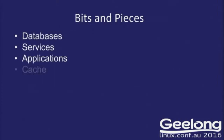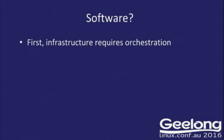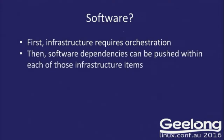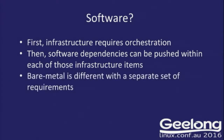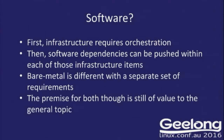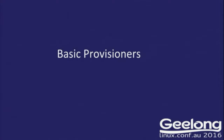You've got your different bits of infrastructure: databases, services, all the way up to applications, caching layers, and whatever routing you might require. You want to look at orchestrating all of your infrastructure — software dependencies need to be mapped and managed, and you want to be able to push these across each part. You don't want to have to remember which applications require what dependencies. Hardware is a bit different — you can't just destroy one piece and create a new piece; it's long-lived. But you can use a lot of tools on both with the same general ideas.